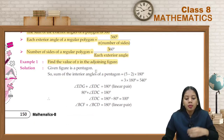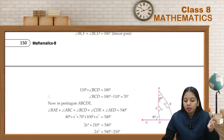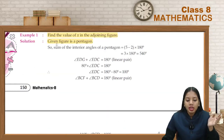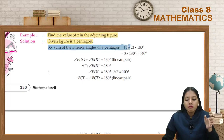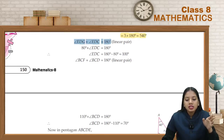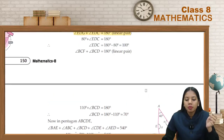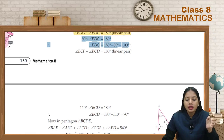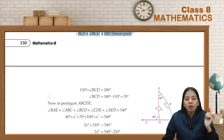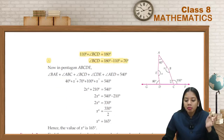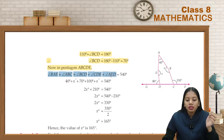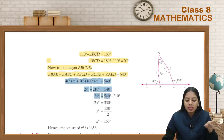Find the value of x in the adjoining figure. This figure is a pentagon. The sum of interior angles of a pentagon is (5 minus 2) into 180 degrees, which is 3 into 180 = 540 degrees. Using the linear pair property: angle EDG plus angle EDC equals 180 degrees. EDG is 80 degrees, so EDC is 100 degrees. Similarly, BCF and BCD form a linear pair — BCD is 70 degrees. In pentagon ABCDE, with angles 40 degrees, EDC, BCD, and 2X equated to 540 degrees, we find the value of X.